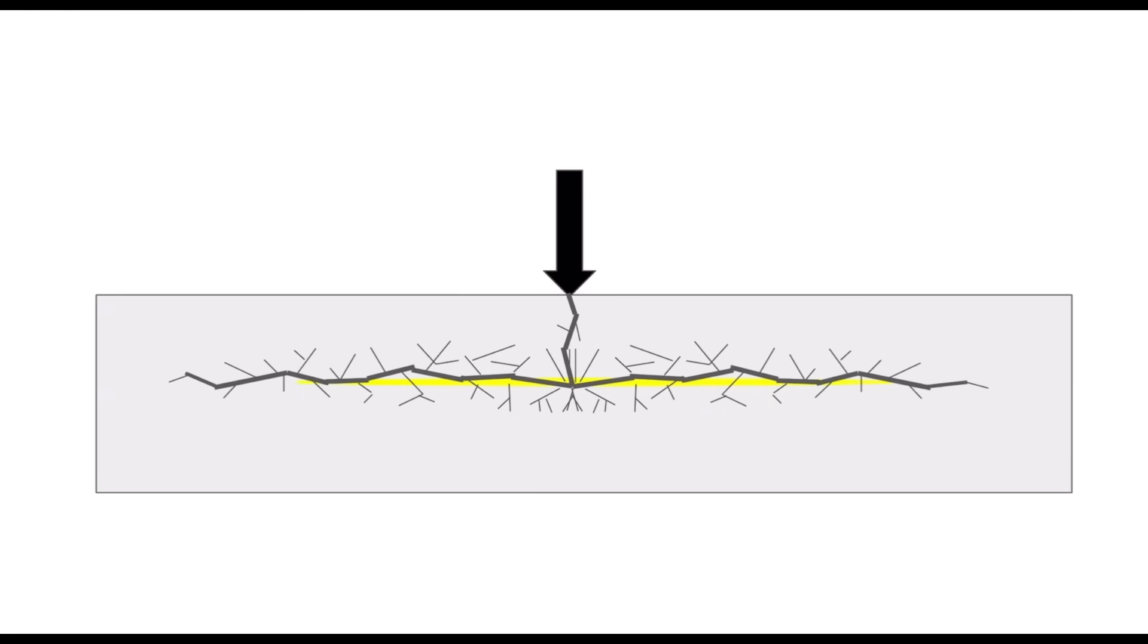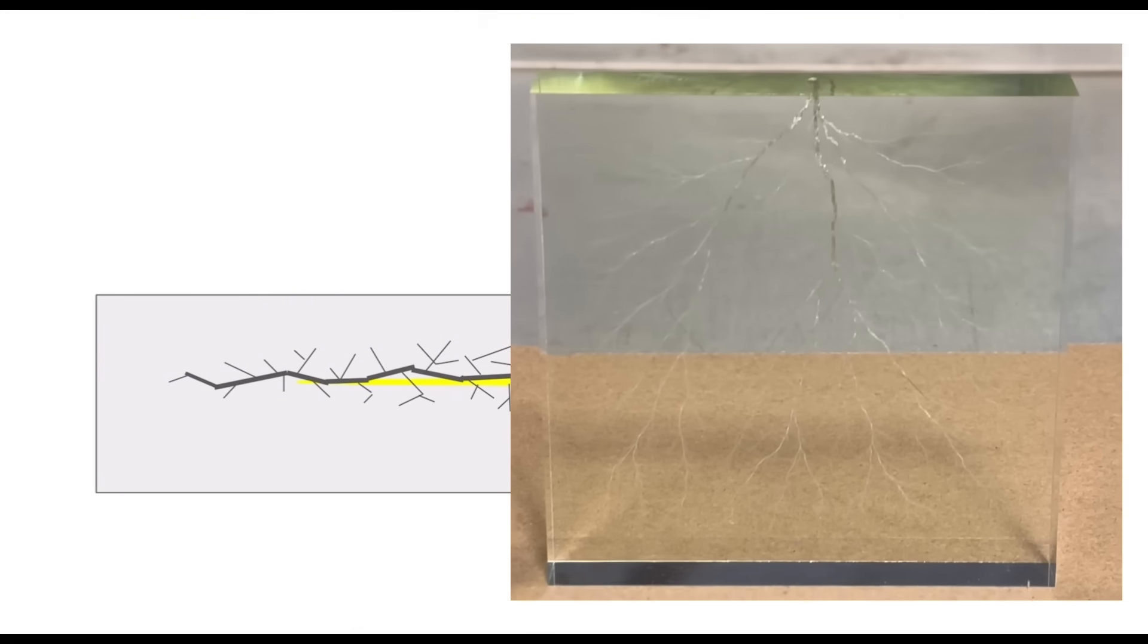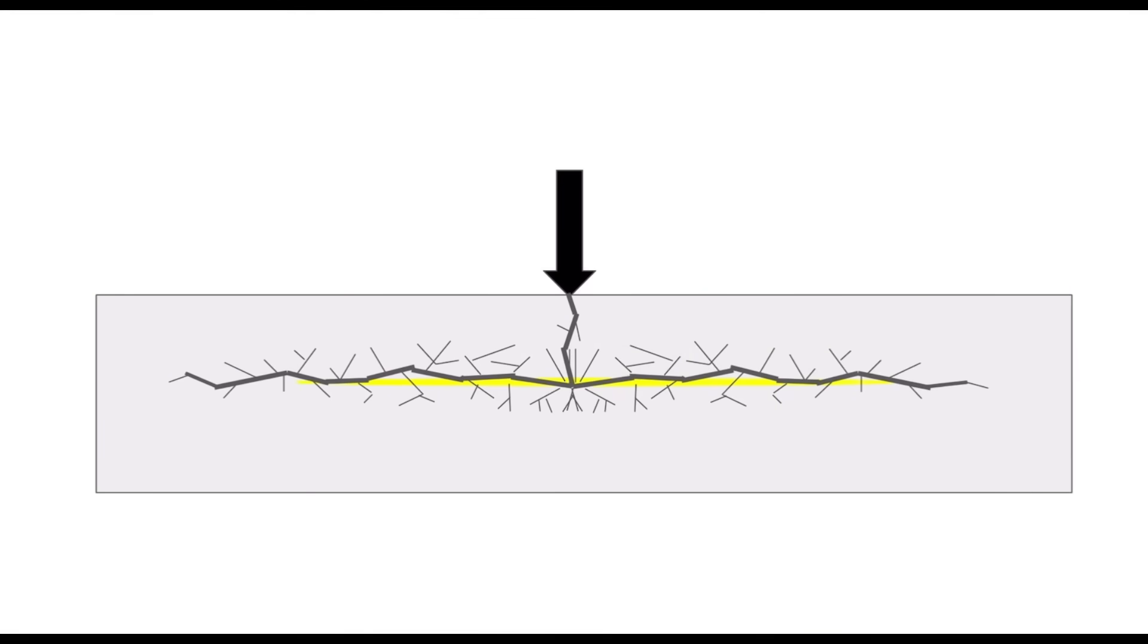Now I want you to notice two things. One is that we can see that there is still a small amount of charge that remains. This charge is the reason behind the secondary discharges that we see after the first primary discharge. You can see these secondary discharges playing in the video in the top right, and these secondary discharges can last on the order of minutes.